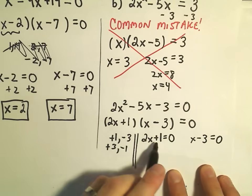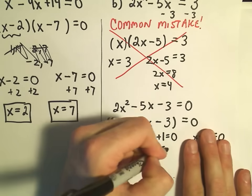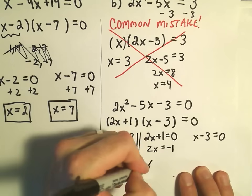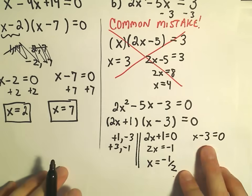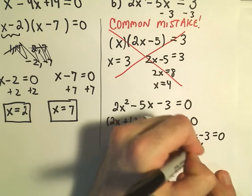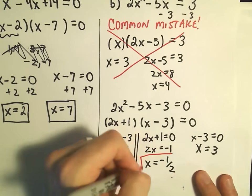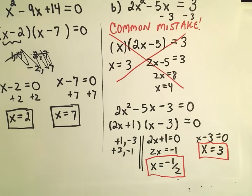I would subtract 1 from both sides on my first equation. So I would get 2x equals negative 1, and then I would divide both sides by 2, and I would get x equals negative 1 half as one of my solutions. For the other one, I would simply add 3 and get x equals positive 3, and I've got my 2 solutions to that original quadratic equation.